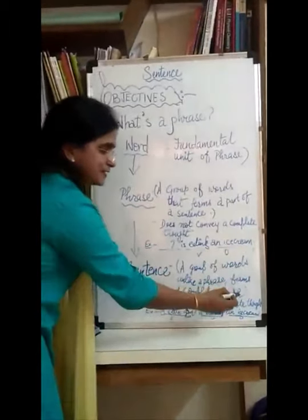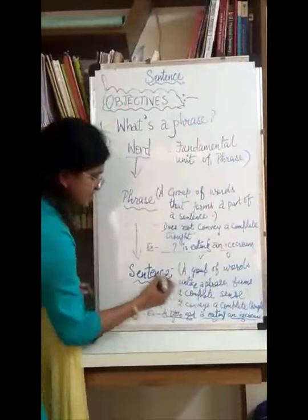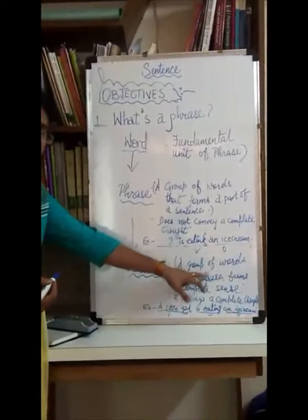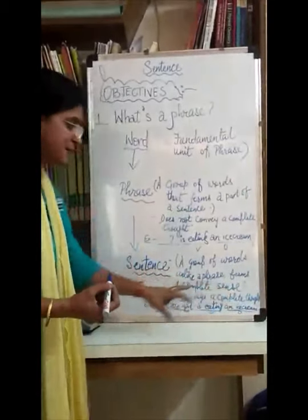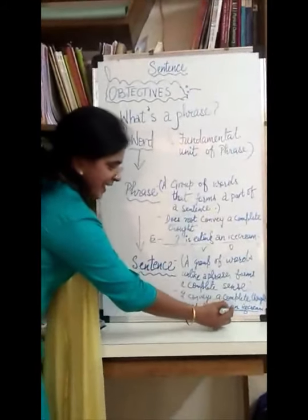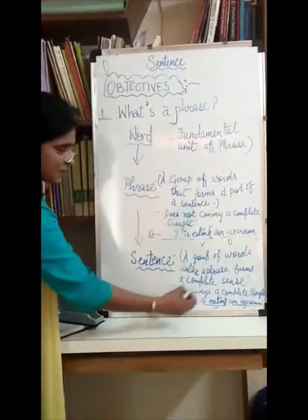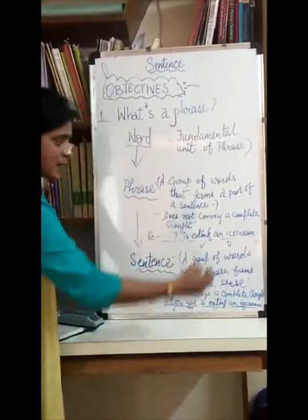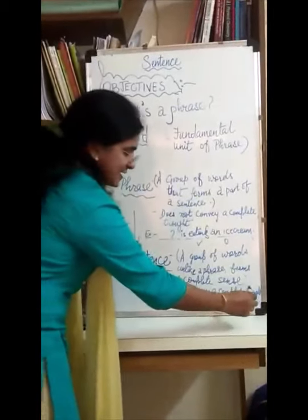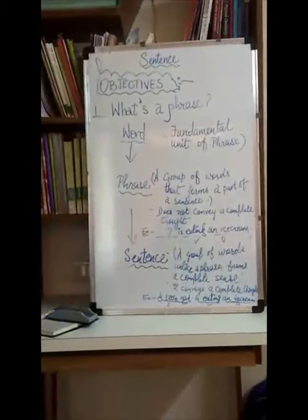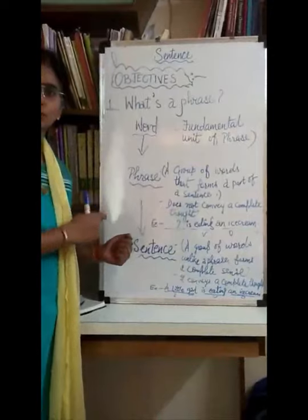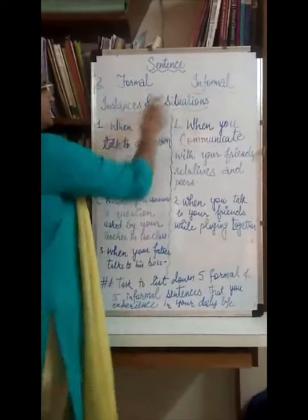When we have a group of words — unlike a phrase — that forms a complete sense, it is called a sentence. Please pay attention: a sentence conveys a complete thought. For example, 'a little girl is eating an ice cream' — here we have subject plus verb plus object, which completes the structure of a sentence. I hope this objective is clear.